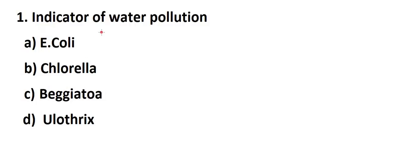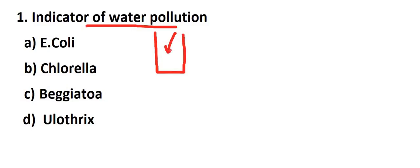Next question: what is an indicator of water pollution? To check if water is clean, we must check that it does not have bacteria like E. coli. If E. coli is present, the water cannot be used for human consumption because these bacteria are harmful. So E. coli is an indicator of water pollution. Option A is the right answer.